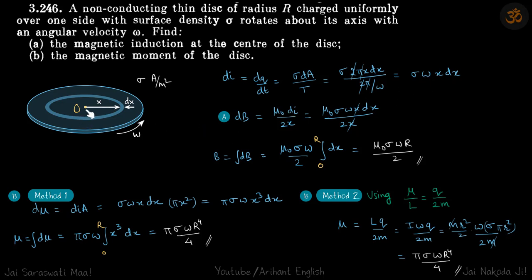Now the field at the center because of the loop is μ₀di by 2x, a standard result. We replace di by this expression and integrate from 0 to r to get the total field.